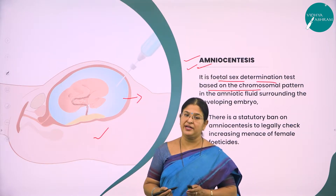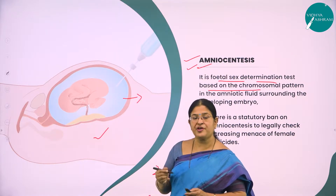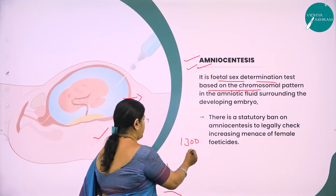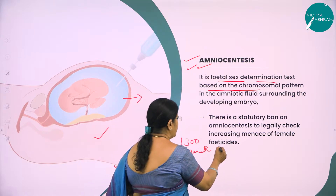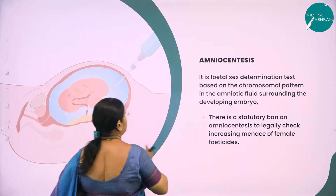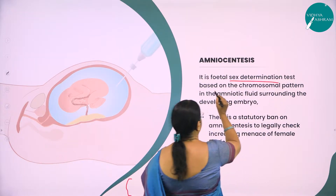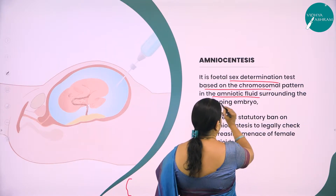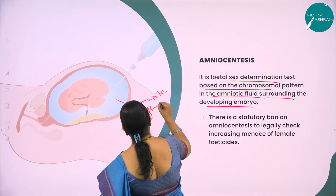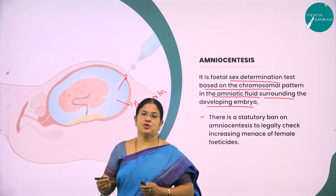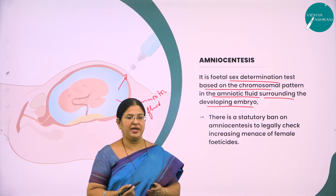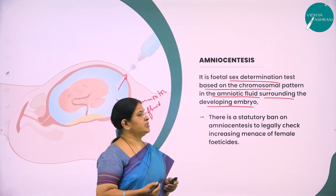Amniocentesis is also a cytological technique of prenatal diagnosis for hereditary diseases. It was first used at the All India Institute of Medical Science and can detect around 1300 genetic abnormalities. The amniotic fluid is extracted and the chromosomal pattern is studied to find whether the developing fetus is male or female. The government has now banned amniocentesis.